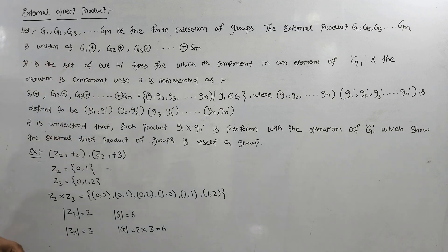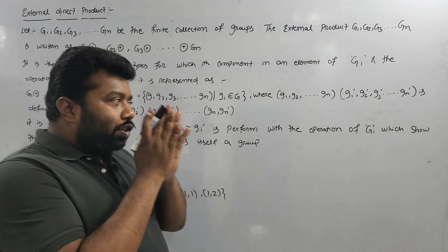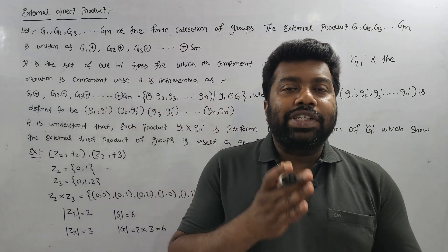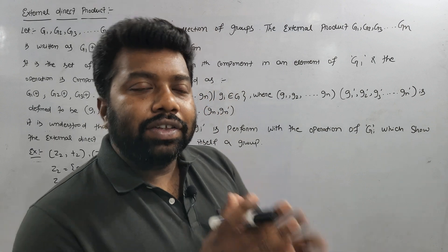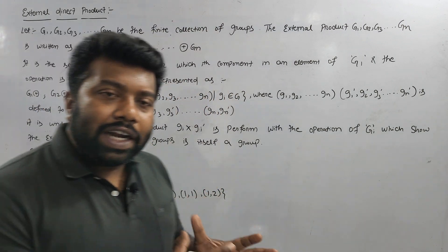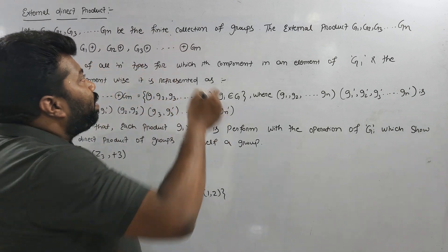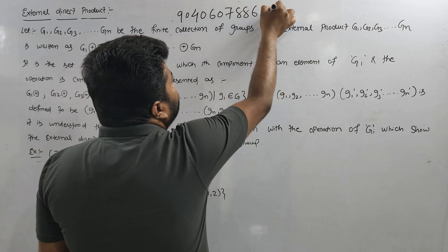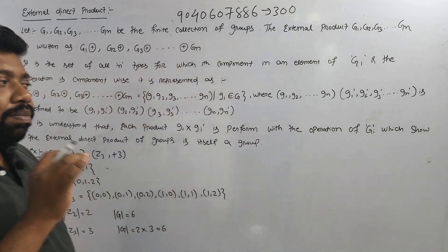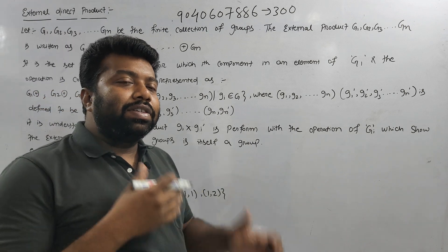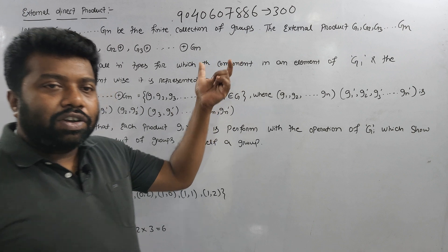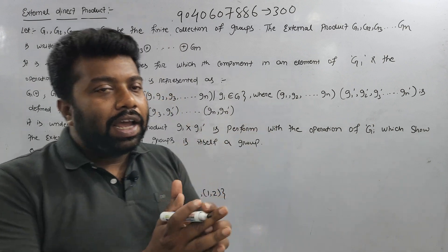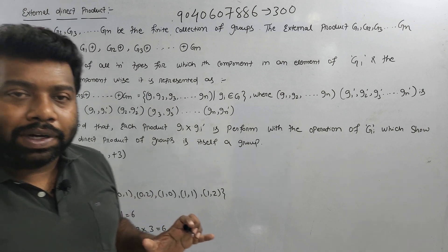We have seen the external direct product. If you have mathematics and chemistry in the second semester, you will be able to start all the papers. You will be able to join the group — contact number 9040607886. Each paper is only 300 rupees. We will provide all the study materials and complete the total data core paper.